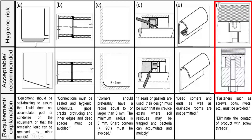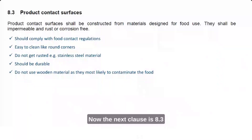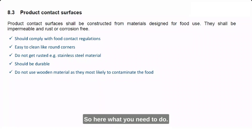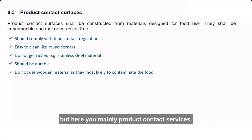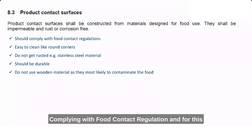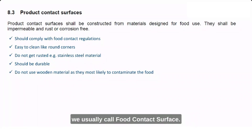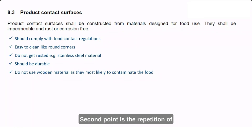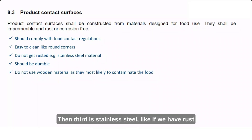Clause 8.3 covers product contact surfaces. The first thing an auditor will ask is whether the food contact surfaces comply with food contact regulations — you need to present a food contact compliance certificate. The second point repeats the previous one regarding rounded corners. The third point concerns stainless steel: if there is rust, corrosion, or other damage on surfaces that directly contact food, that is a non-compliance.